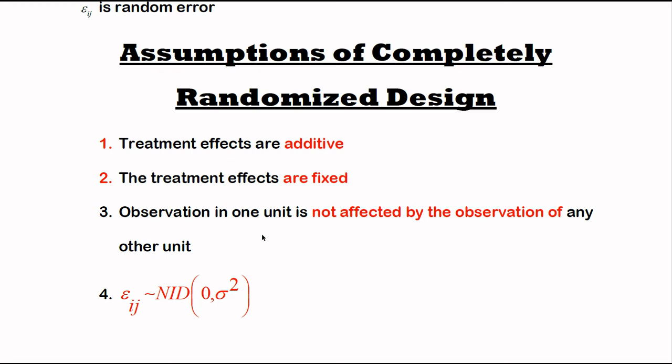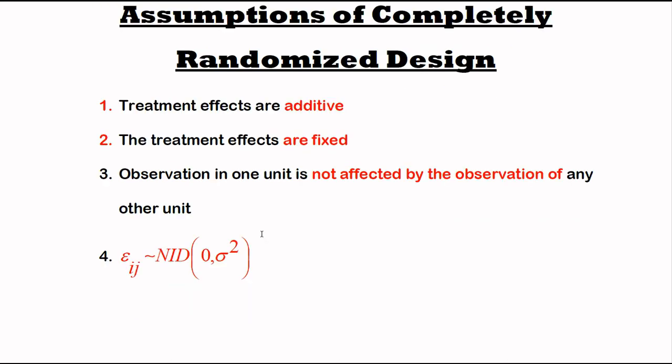Each observation is independent of other observations; there is no dependency. 4) The error term is normally and independently distributed. In the case of normally and independently distributed, its mean is zero with variance sigma squared. These are the four